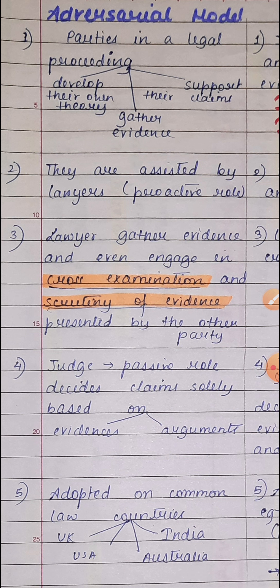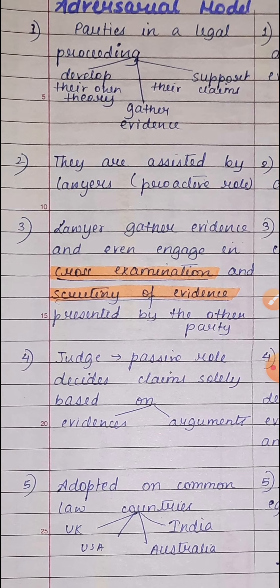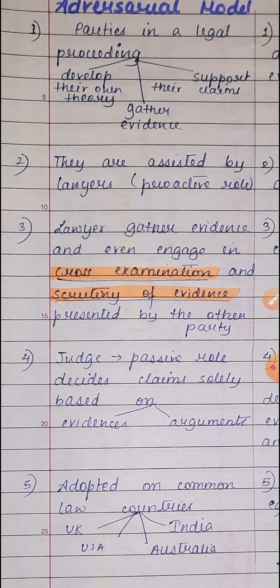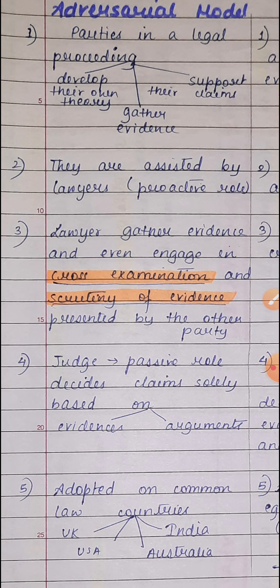The chapter begins with a comparison between the adversarial and the inquisitorial model. In the adversarial model, there are two opposing parties presenting their case before a neutral judge who plays a passive role. The parties employ lawyers who develop their own theory of the case and gather evidence to support their claims. These lawyers play a proactive role — they debate the case, gather evidence, and engage in cross-examination, critically scrutinizing evidence presented by the other party. The judge is neutral, passive, and inactive.